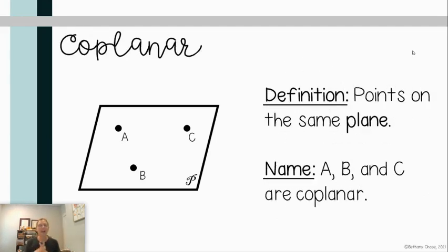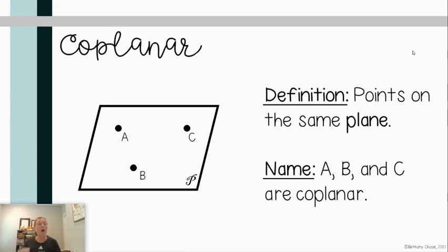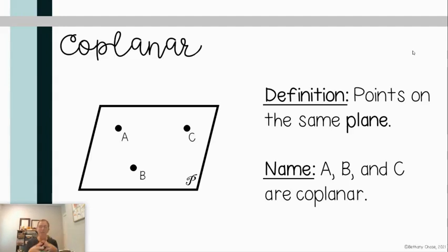Coplanar is our next term. Think back — collinear meant three points on the same line. Coplanar means points on the same plane. In our diagram, points A, B, and C are all coplanar. The prefix 'co-' means together, so think about breaking these words apart to help you understand them.